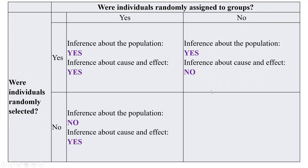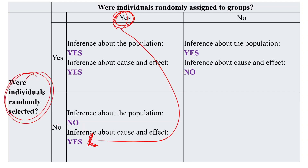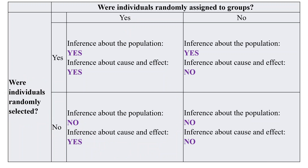And the last box: if individuals were neither randomly assigned nor randomly selected, we can't make any inferences at all. We have to have random assignment or random selection in order to draw valid inferences. Without randomization, we introduce bias or confounding variables and cannot draw accurate conclusions.